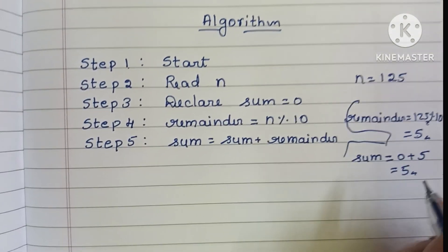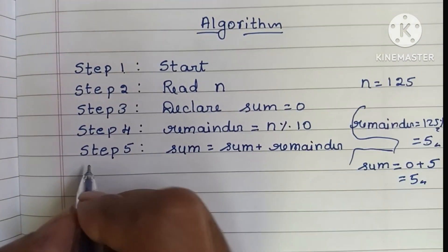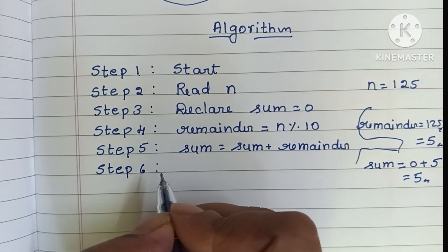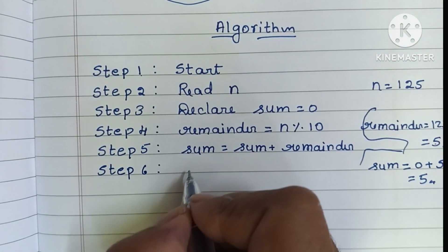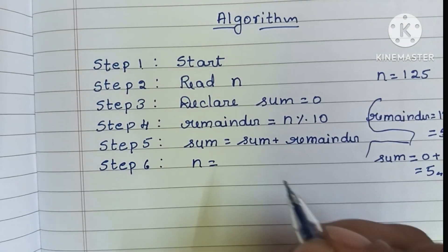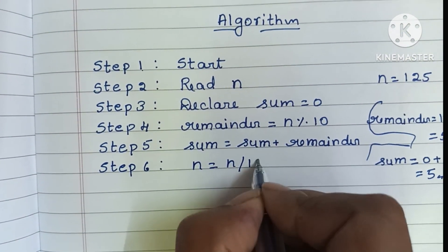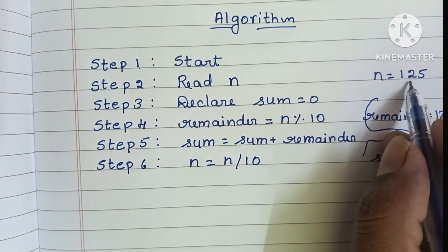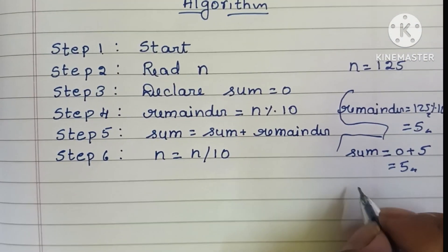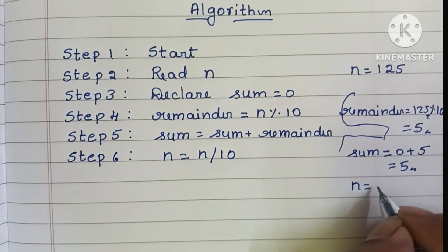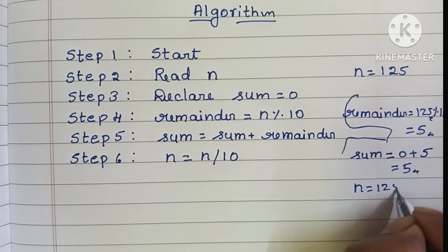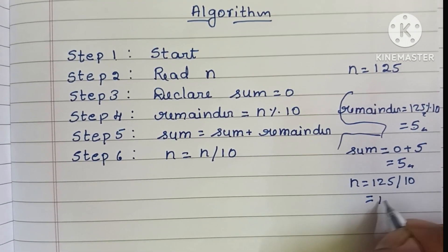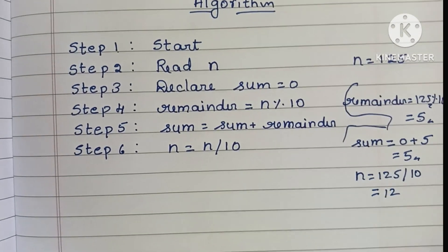In step 6, we update N: N = N divided by 10. The current value of N is 125, so 125 divided by 10 gives N equal to 12.